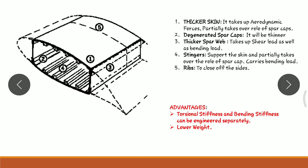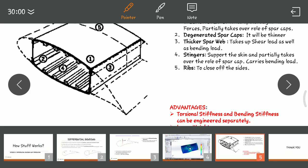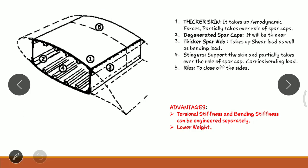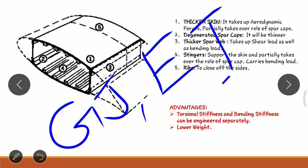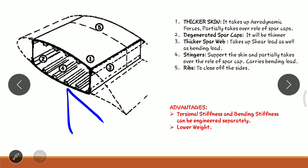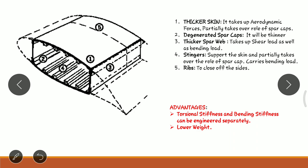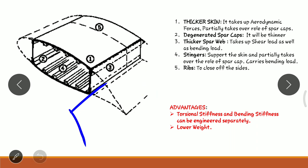One important advantage of the torsion box is that its weight will be very less, and the torsional stiffness and bending stiffness can be tailored according to the requirement. Torsional stiffness is the product of shear modulus and polar moment of inertia (GJ); bending stiffness is the product of Young's modulus and second moment of area (EI); and axial stiffness, provided by the stringers, is the product of modulus of elasticity and cross-sectional area (EA).